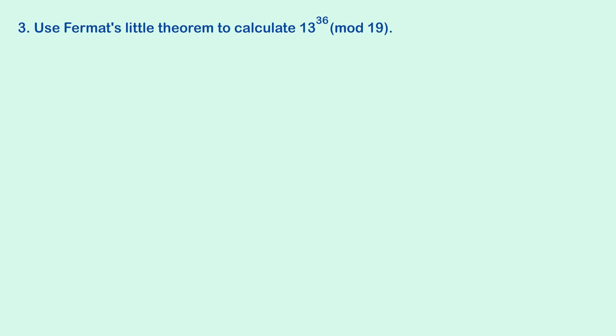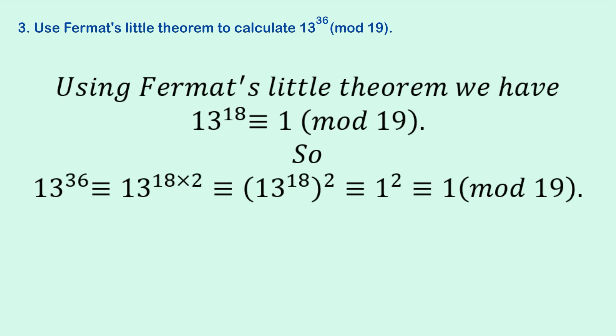Okay, so you might get this sort of idea. Use Fermat's Little Theorem to calculate 13 to the 36 modulo 19. Now, you can work this out in a lot of ways that don't involve Fermat's Little Theorem. If you're interested in that, have a look at my video, Modular Exponentiation Made Easy, where I go through three different methods. But here we're told you have to use Fermat's Little Theorem.